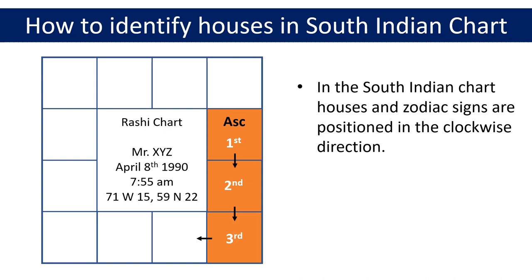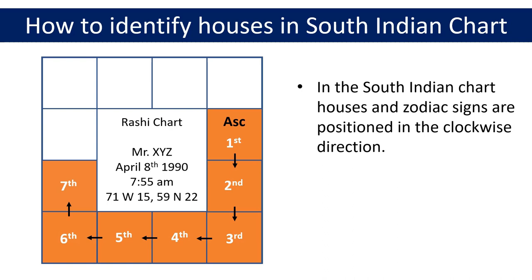The positions of the houses in the South Indian chart are not fixed but depend on the position of the ascendant or lagna, which is considered the first house. The remaining houses are identified by taking the clockwise route from the first house — the second house by moving two places, the third house by moving three places clockwise. Continuing in the same way, we arrive at the fourth house, fifth house, sixth house, seventh house, and so on.